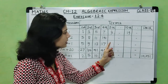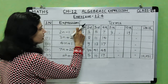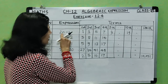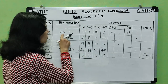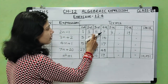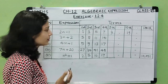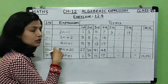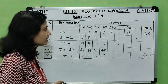For the expression 2n minus 1: the first term means n equals 1, so 2 into 1 minus 1 equals 1. Second term: n equals 2, so 2 into 2 minus 1 equals 3. Third term: 2 into 3 minus 1 equals 5. The pattern is 1, 3, 5, 7, 9... For the hundredth term, put n equals 100: 2 into 100 minus 1 equals 200 minus 1 equals 199.